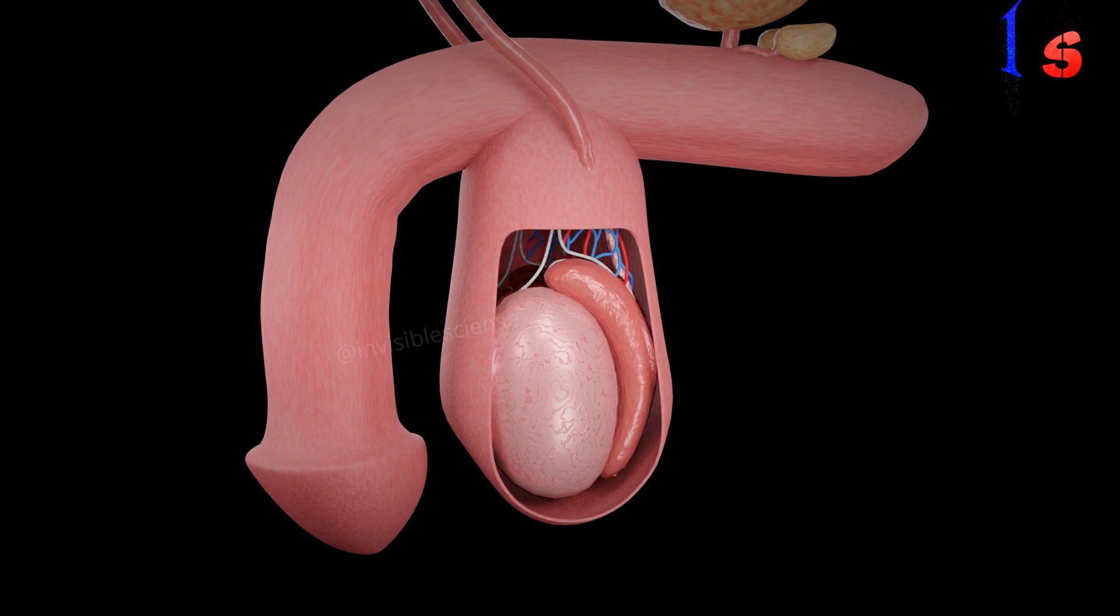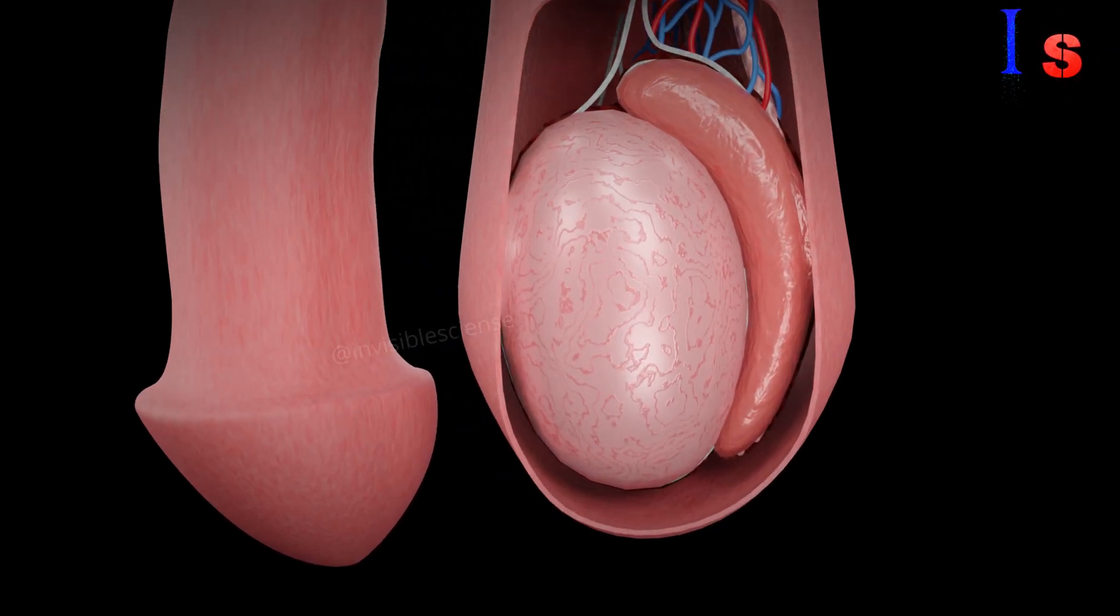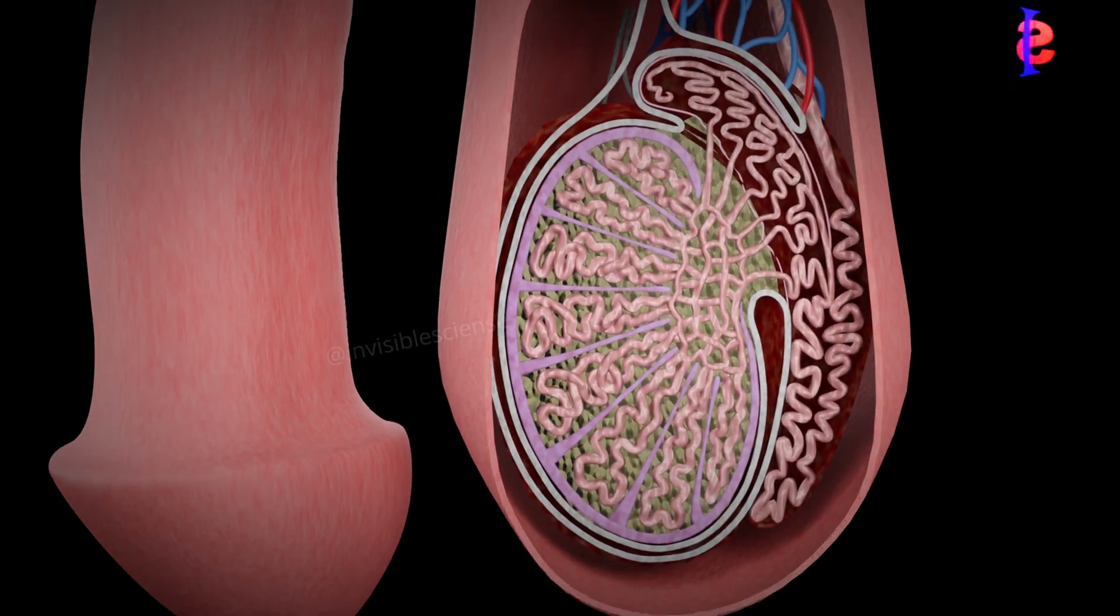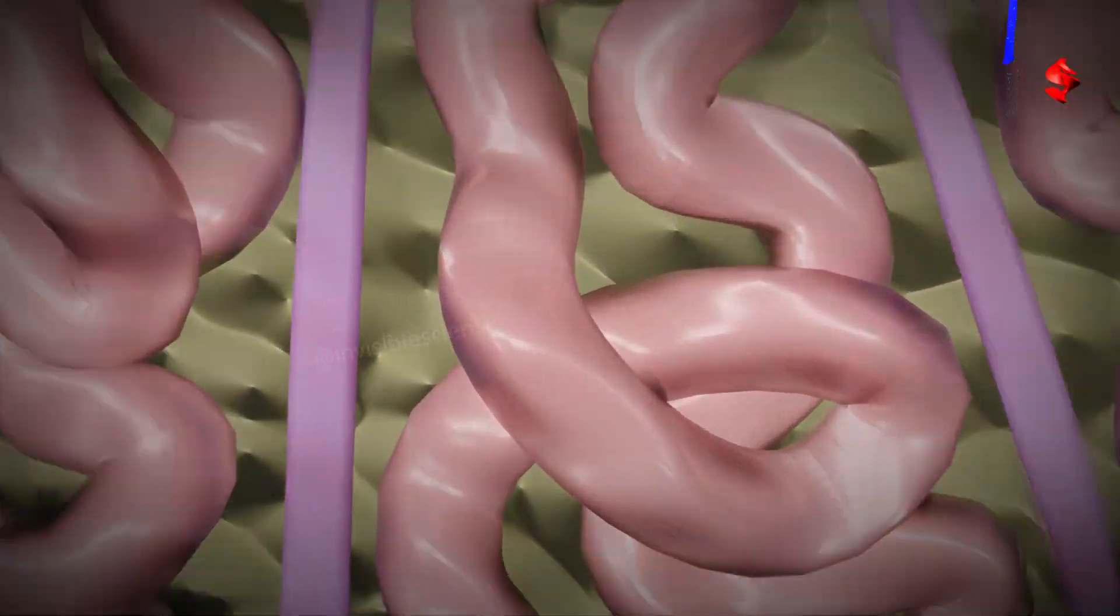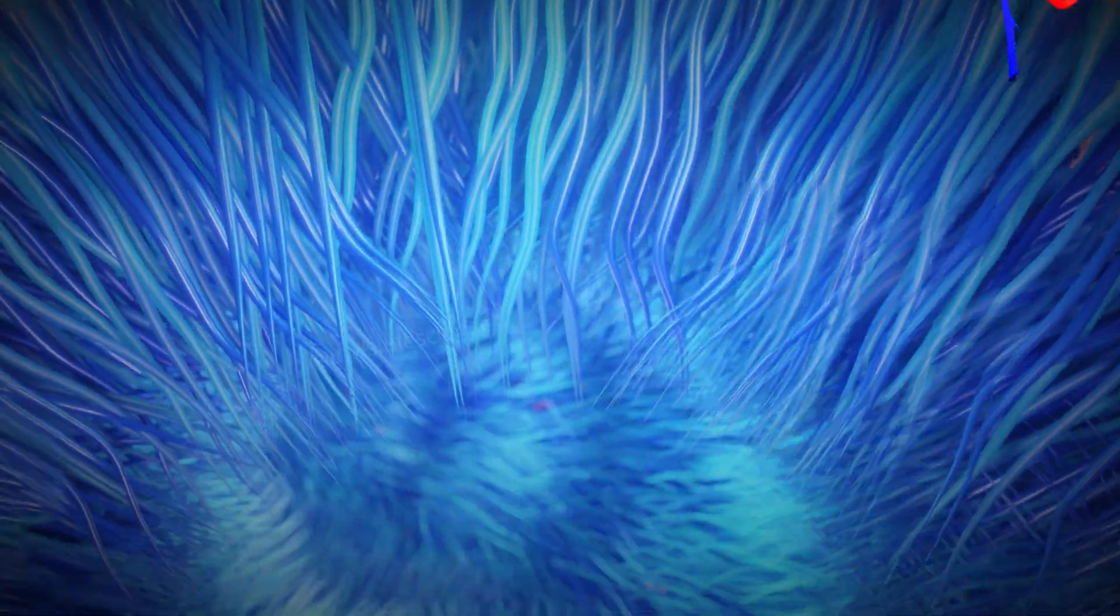The journey of a sperm cell begins in the testes. Inside the testes, there are tiny tubes called seminiferous tubules, where sperm cells are produced through a process called spermatogenesis.